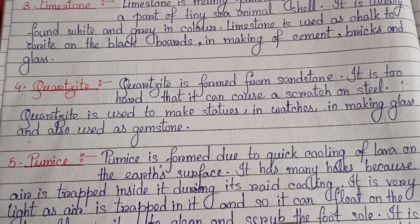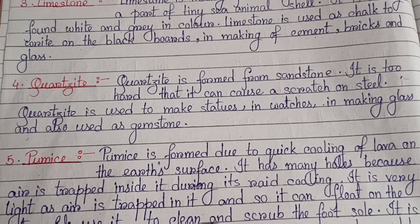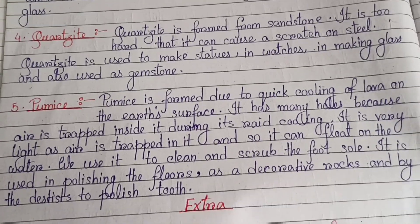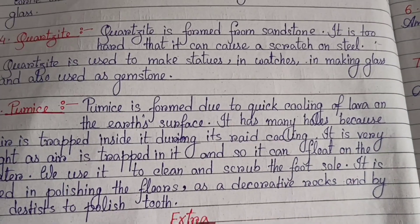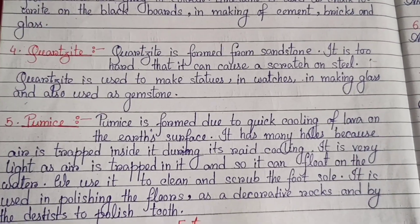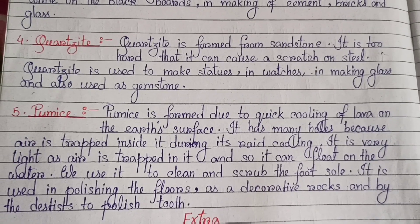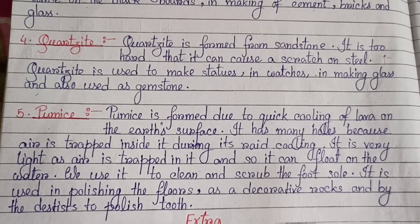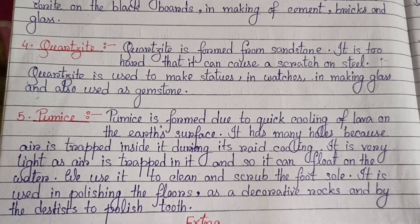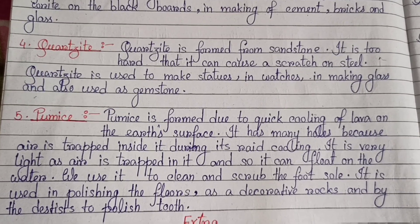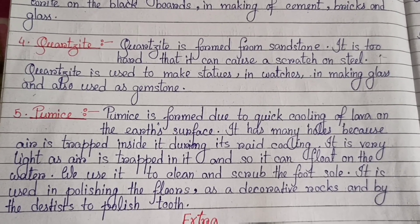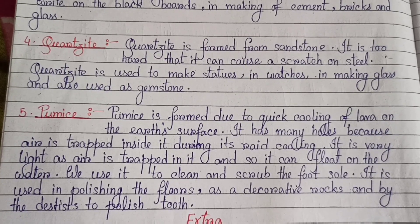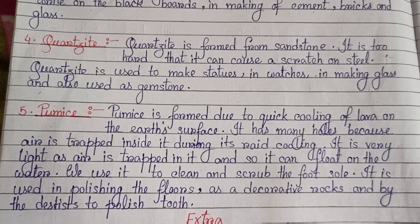Quartzite is used to make statues, in watches, in making glass, and also used as a gemstone. Number five: Pumice — pumice is formed due to quick cooling of lava on the Earth's surface. It has many holes because air is trapped inside it during its rapid cooling. It is very light as air is trapped in it and so it can float on water. We use it to clean and scrub the foot sole, used in polishing floors, as decorative blocks, and by the dentist to polish teeth.